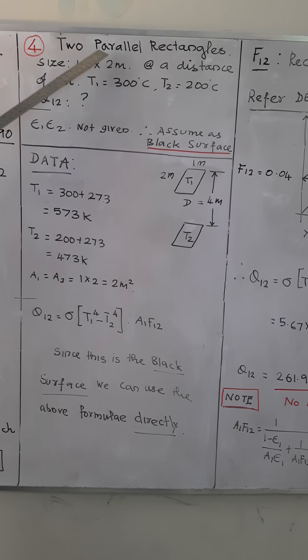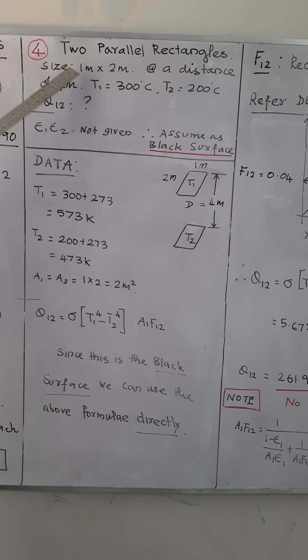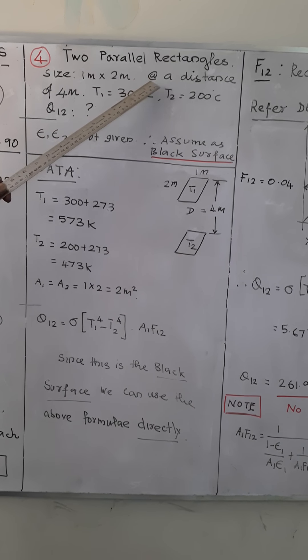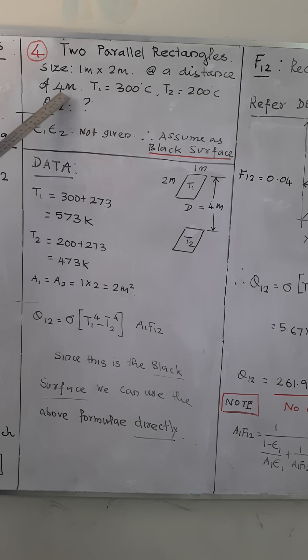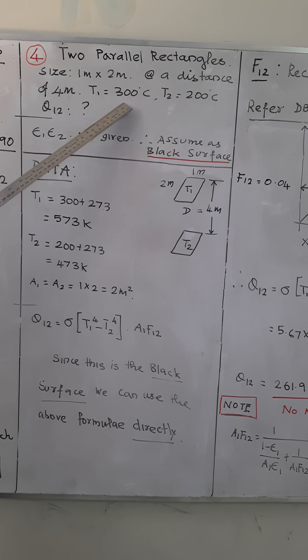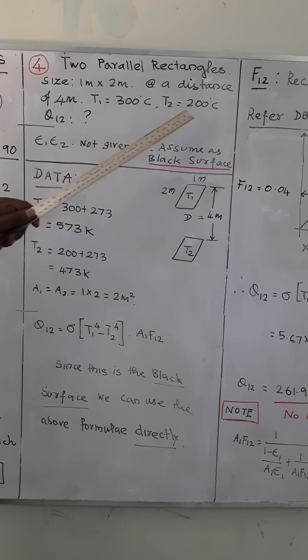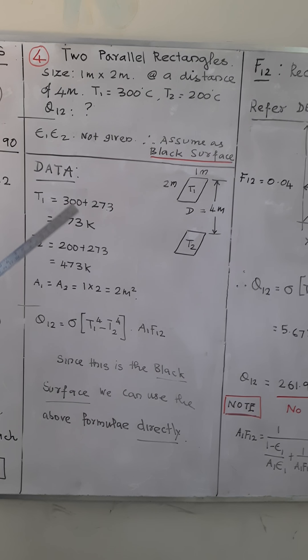Two parallel rectangles of size 1 meter by 2 meter are separated at a distance of 4 meters apart. If one is maintained at 300 degrees centigrade and another one is at 200 degrees centigrade, we are going to calculate the amount of heat radiated.